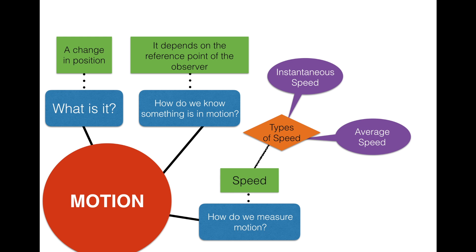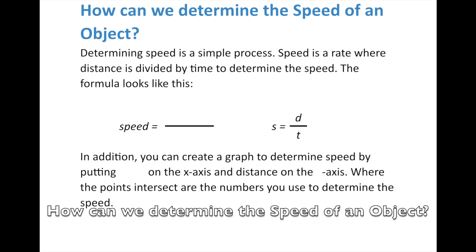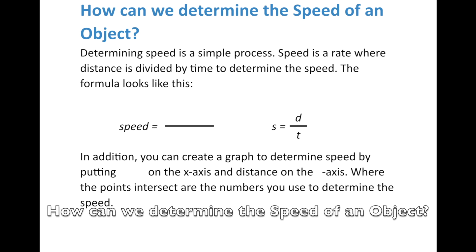Let's add this to our graphic organizer. How do we measure motion? We measure it through speed, and there are two types: instantaneous speed and average speed. We can mathematically determine average speed. The formula is very simple — since speed is a rate where distance is divided by time, the formula is: Speed equals distance divided by time, or S equals D divided by T.